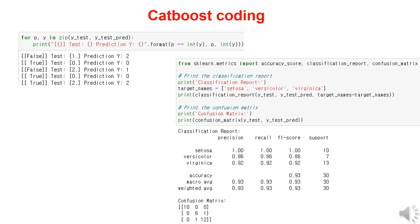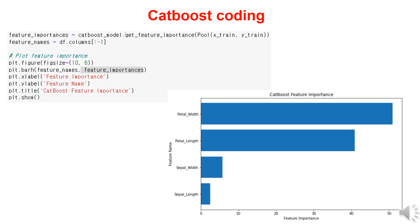You can create a simple for loop to check whether the actual breed matches the predicted breed — the code displays True if they match and False if they do not. Based on the results, you can calculate precision, recall, and F1 score values, and generate a confusion matrix. Additionally, you can use the GetFeatureImportance command to visualize feature importance. In this case, it shows that the petal width has the greatest impact on classifying the iris flower.